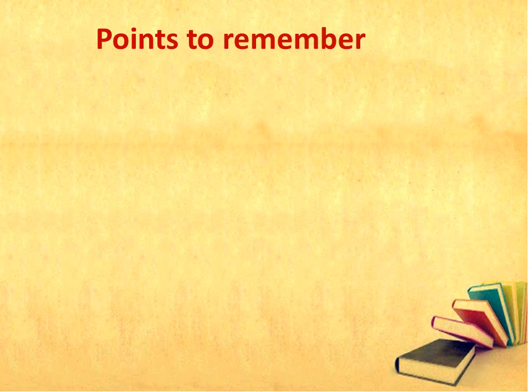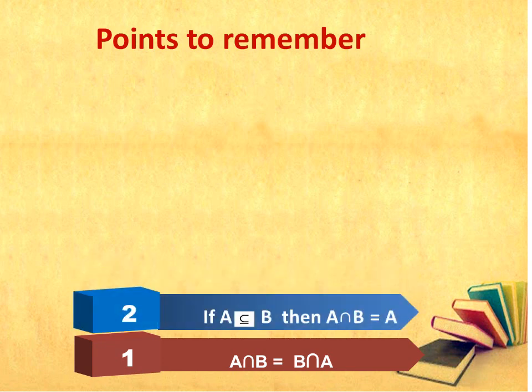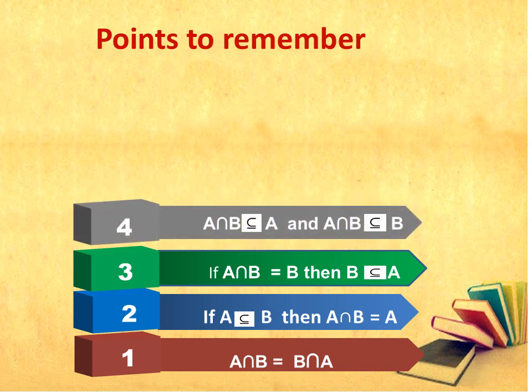The next points to remember under the intersection of sets: First, A intersection B will always equal B intersection A. Second, if A is a subset of B, then A intersection B will be equal to A. Third, if A intersection B is equal to B, then definitely B will be a subset of A.